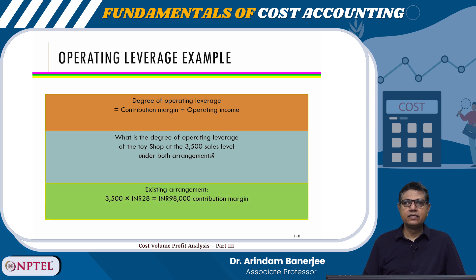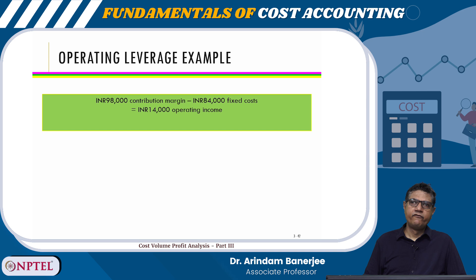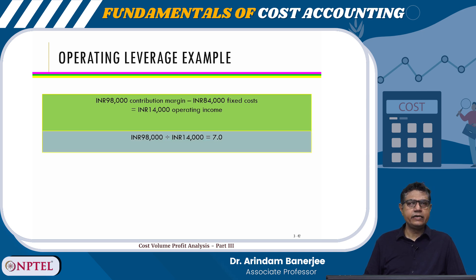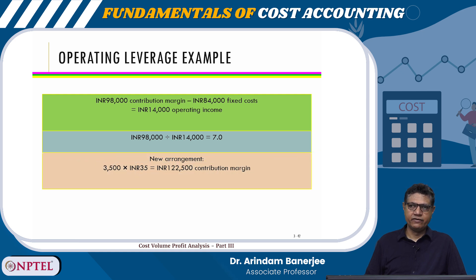Under the existing arrangement at 3,500 units, the original contribution margin is ₹28. So 3,500 × ₹28 = ₹98,000 contribution margin. Minus the original fixed cost of ₹84,000 gives ₹14,000 operating income. Therefore, ₹98,000 divided by ₹14,000 gives an operating leverage of 7.0.